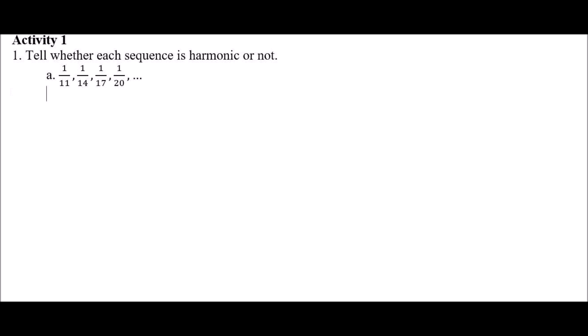We proceed to Activity 1. In number 1, we need to tell whether each sequence is harmonic or not. In letter A, we have 1/11, 1/14, 1/17, 1/20, and so on. First, we need to get the reciprocal of each term in this sequence. The reciprocal of 1/11 is 11, the reciprocal of 1/14 is 14, the reciprocal of 1/17 is 17, and the reciprocal of 1/20 is 20. Then, in this new formed sequence, we will determine whether it is arithmetic or not by checking the existence of the common difference.